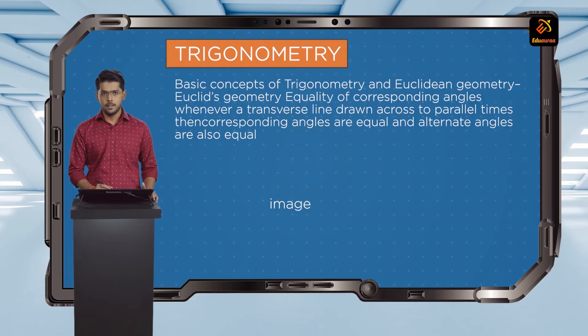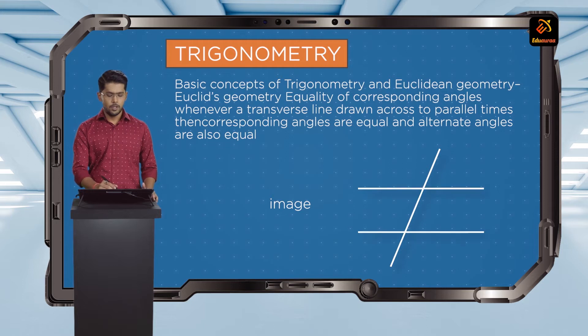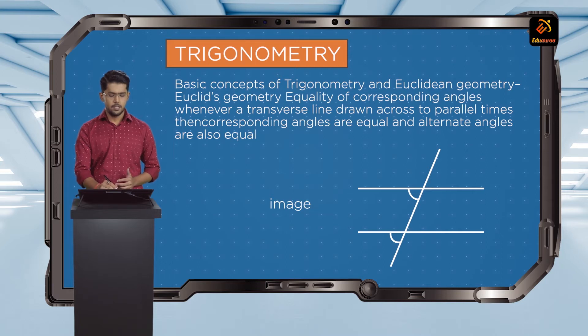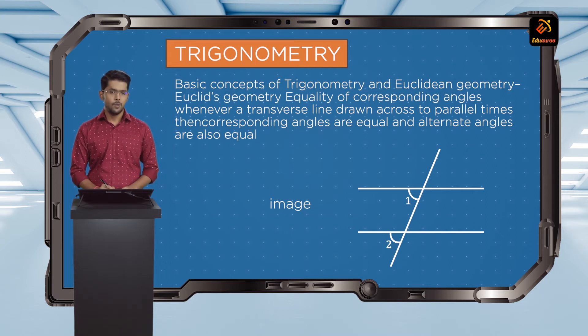I'm sure you'll be familiar with a lot of the properties of lines and angles. Let me just re-elucidate that for you. The equality of corresponding angles: whenever a transversal line is drawn across two parallel lines, the corresponding angles — angles 1 and 2 — are equal. Also, the alternate angles are equal, angle 2 and angle 3 in this case.